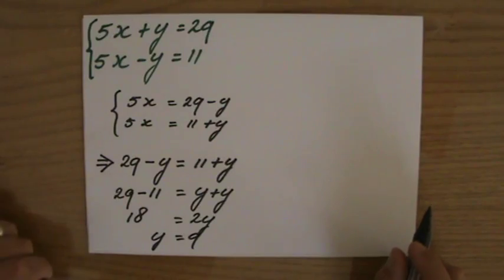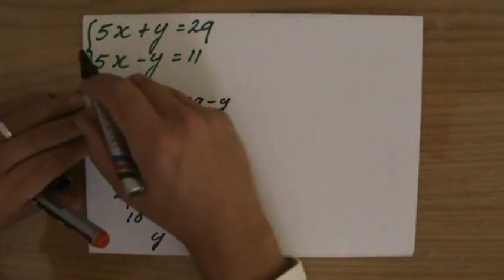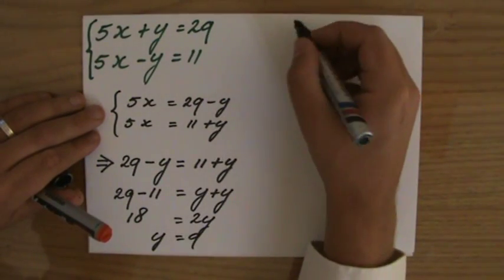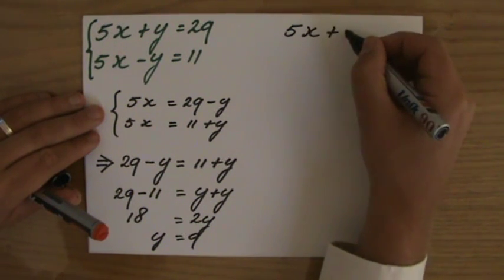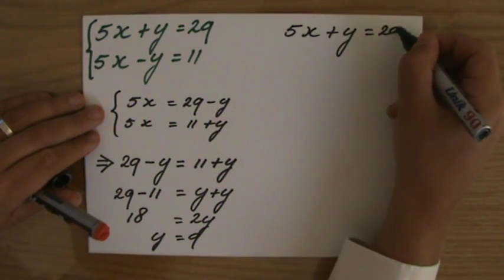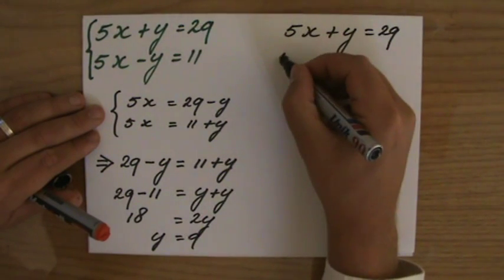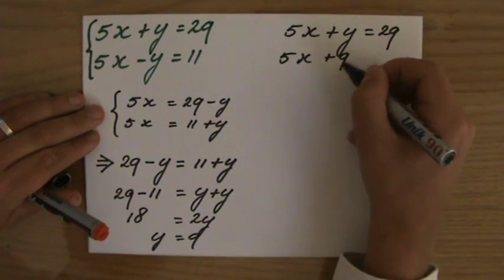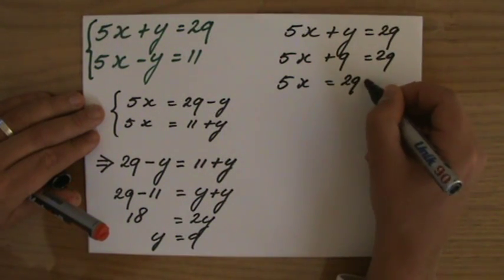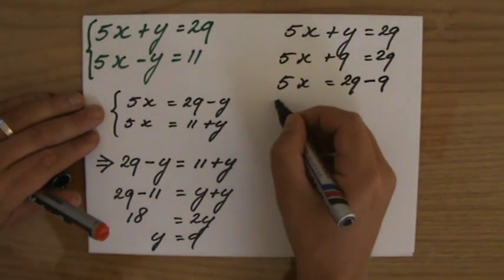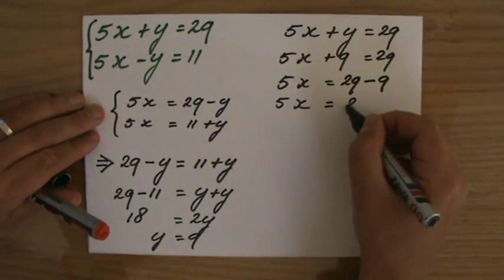Am I finished now? No, because I want to find out x as well. 5x plus y equals 29. I'm going to pick one of the equations, I'll just pick the top one. 5x plus y equals 29. I say y is 9. So 5x plus 9 equals 29. So 5x equals 29 minus 9.